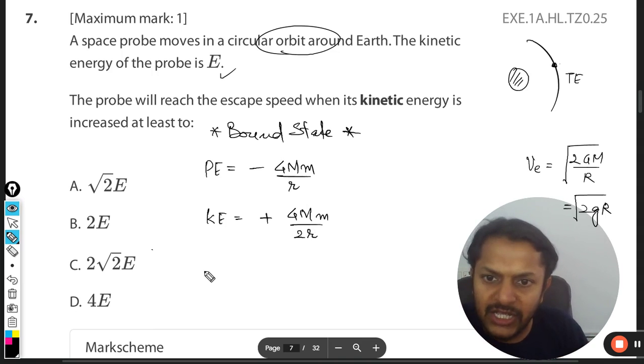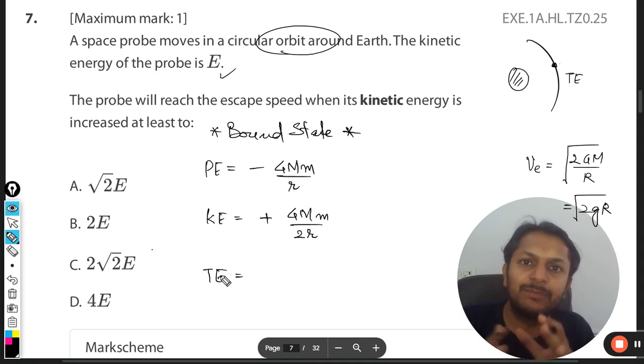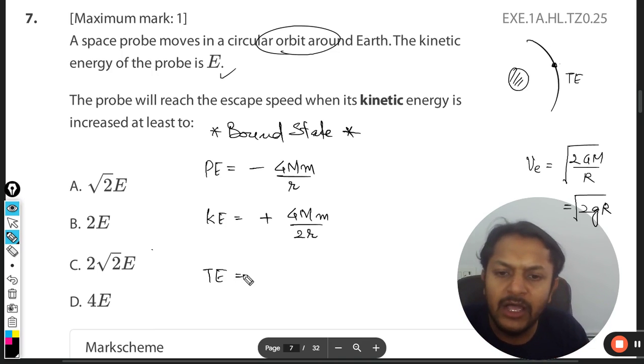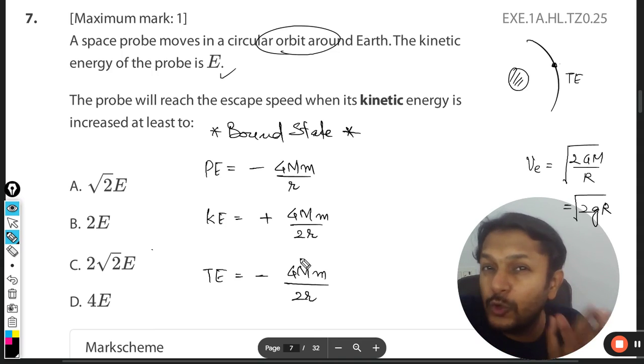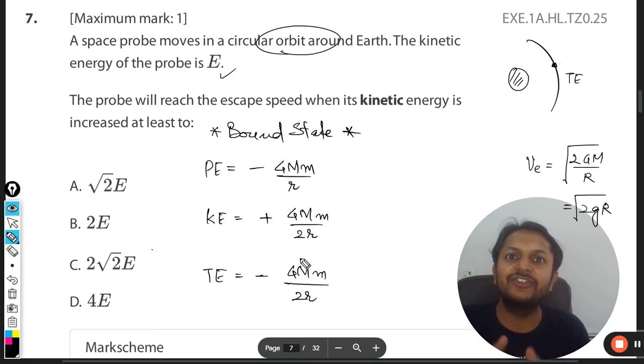Kinetic energy is always positive and its magnitude is half of the magnitude of potential energy. Now what about the total energy? Total energy is when we add these two. So simply you can add this with algebra and you would be getting a negative answer which is negative GMm by 2R. So clearly the magnitude of total energy is equal to the magnitude of kinetic energy, but kinetic energy is positive and total energy is negative.